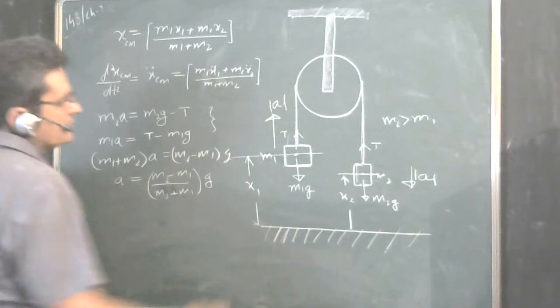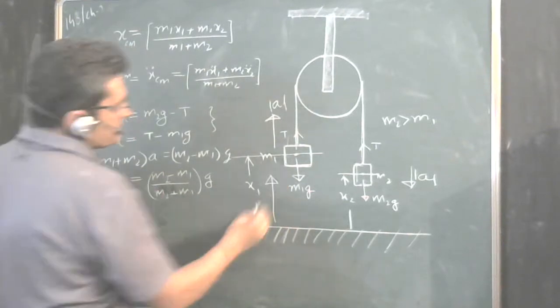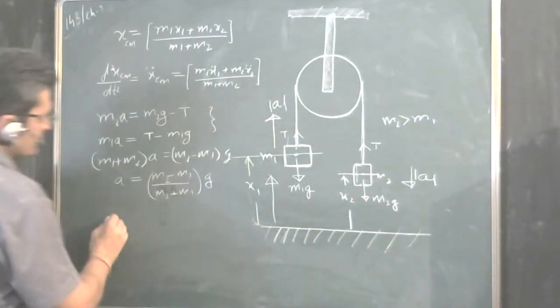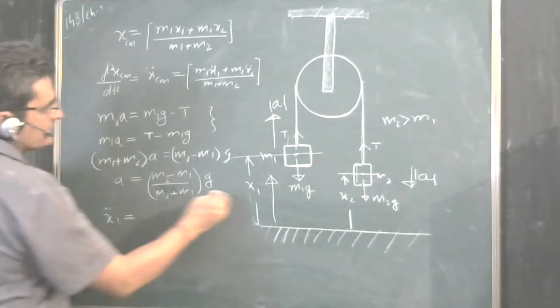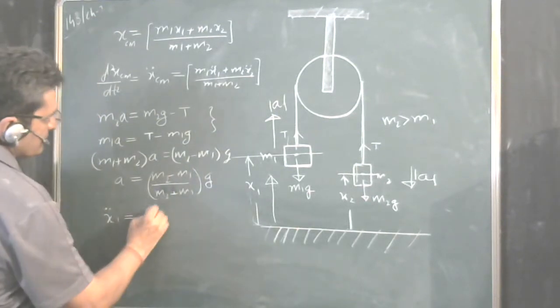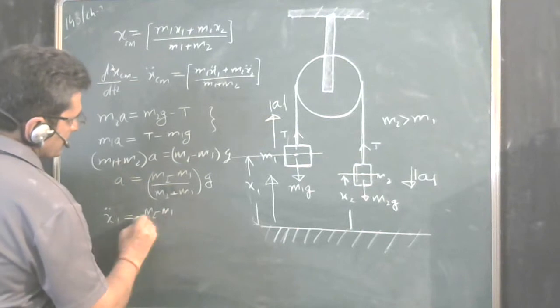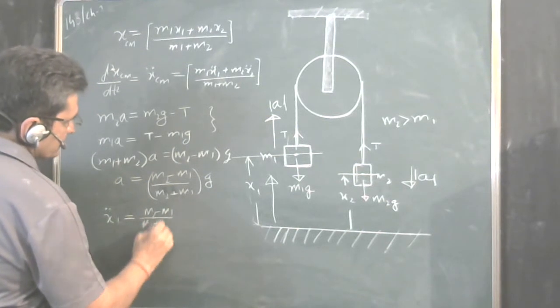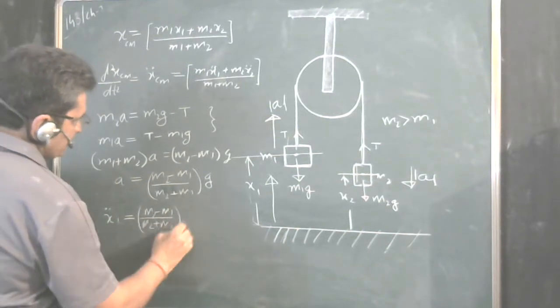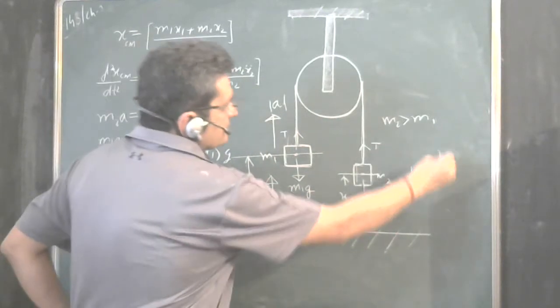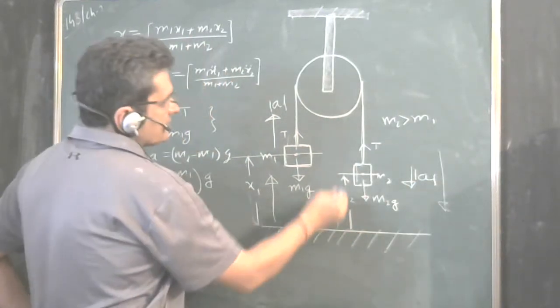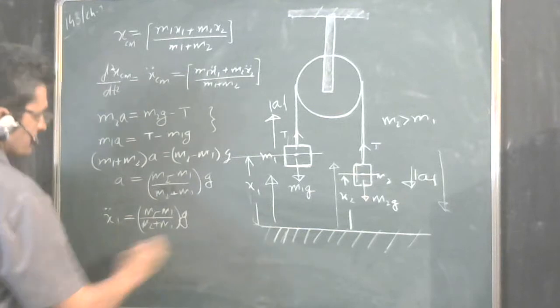Now, we have taken this direction positive in terms of x. So, x1 double dot is this, M2 minus M1 upon M2 plus M1 into G. Here, the acceleration is downwards, but we have taken x positive in this direction.